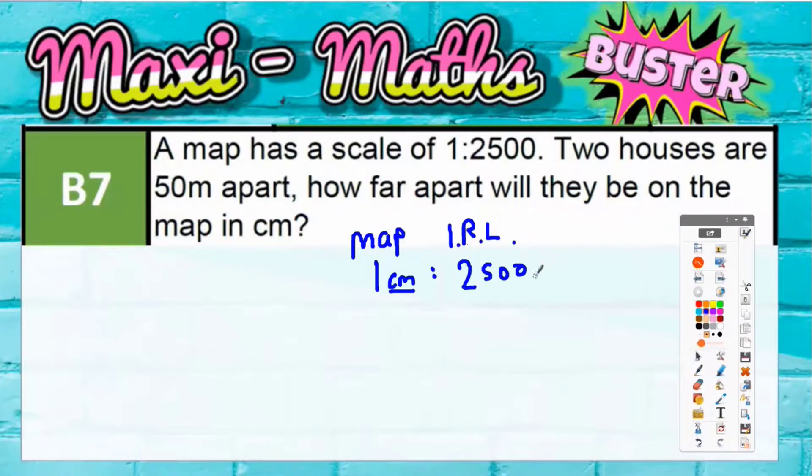And that's also in centimeters even though it doesn't say centimeters. Now what we've got to think about here is that we're changing the 2500 centimeters into 50 meters, but it really needs to be in centimeters. We need to figure out what 50 meters is in centimeters. Remember, each meter is a hundred centimeters.